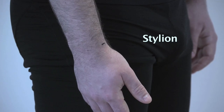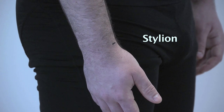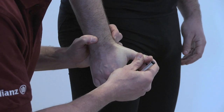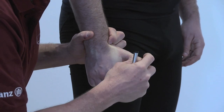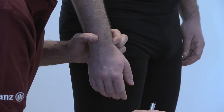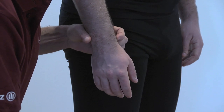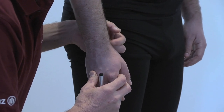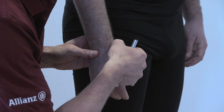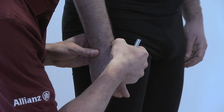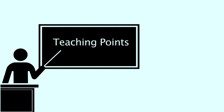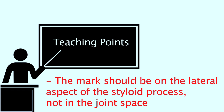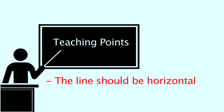To measure forearm length requires landmarking the radiali and stylion. The stylion is the most distal point on the lateral margin of the styloid process of the radius. To locate the stylion, ask the athlete to maximally extend their right thumb and find the anatomical snuff box. Place your thumb or forefinger into the anatomical snuff box and ask the athlete to relax the thumb. Find the lateral aspect of the styloid process and identify the most superior point on the lateral aspect. Teaching points: the mark should be on the lateral aspect of the styloid process, which is covered by just a thin layer of skin — not in the joint space. The line should be horizontal and not vertical.